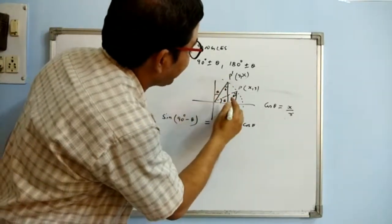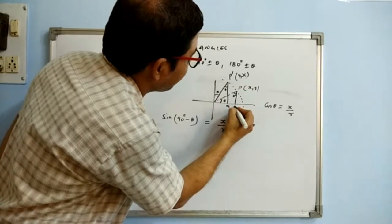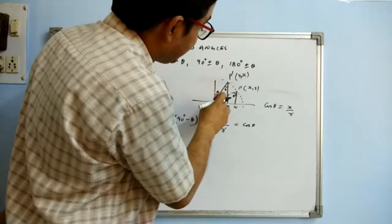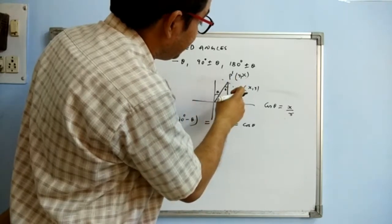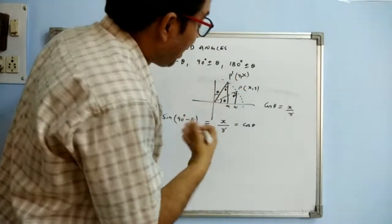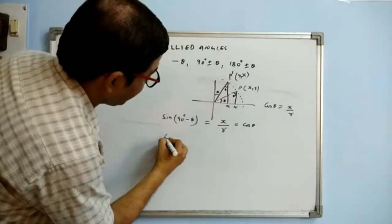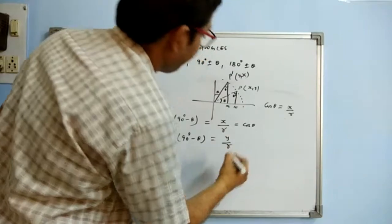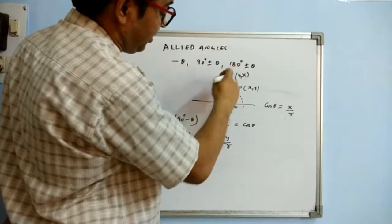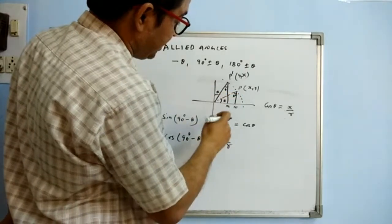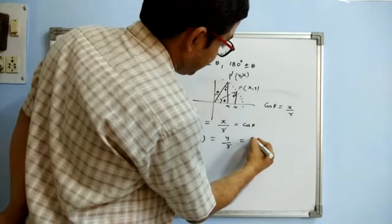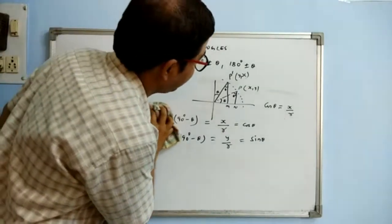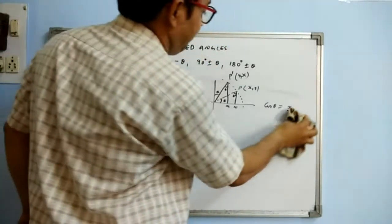We can prove the two triangles OMP and OMP-dash to be congruent: OP equals OP-dash, one angle is theta and the other is 90 minus theta in each triangle. Applying CPCT gives the same result. Similarly, cos of (90 minus theta) equals y by r, which is sine theta. The same logic applies for other ratios of 90 minus theta.